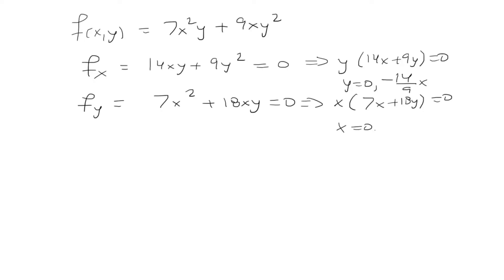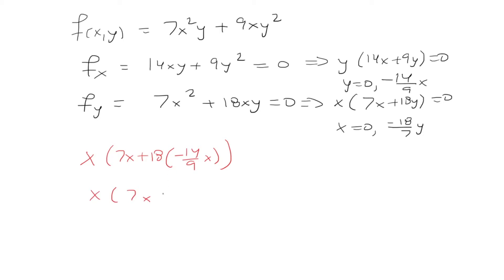Similarly, from the second equation, x = 0 or x = −18/7 · y. Now, if we plug y = −14/9 · x into the bottom equation, we get x(7x + 18·(−14/9)x) = x(7x − 28x) = x(−21x) = −21x², which equals 0 only when x = 0.